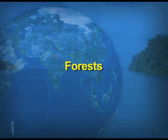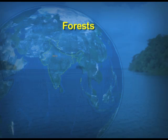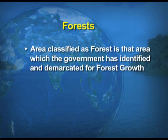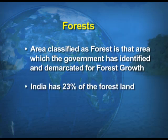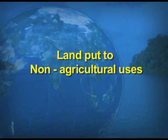First, we take up forest land. The area classified as forest is that area which the government has identified and demarcated for forest growth. India has 23% of the land under forest land. The next land use category is land put to non-agricultural uses.